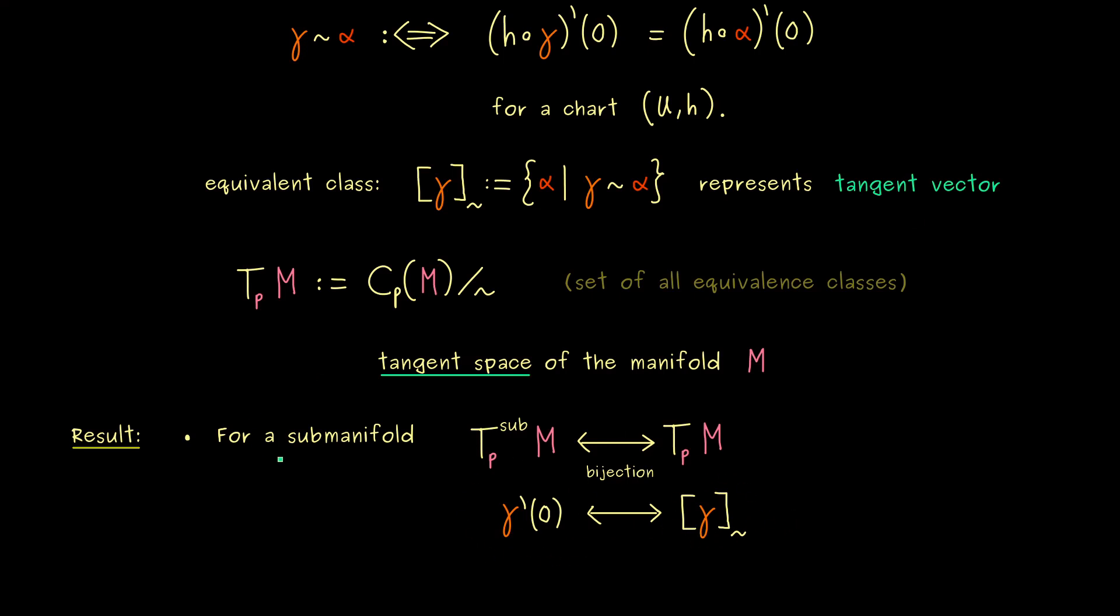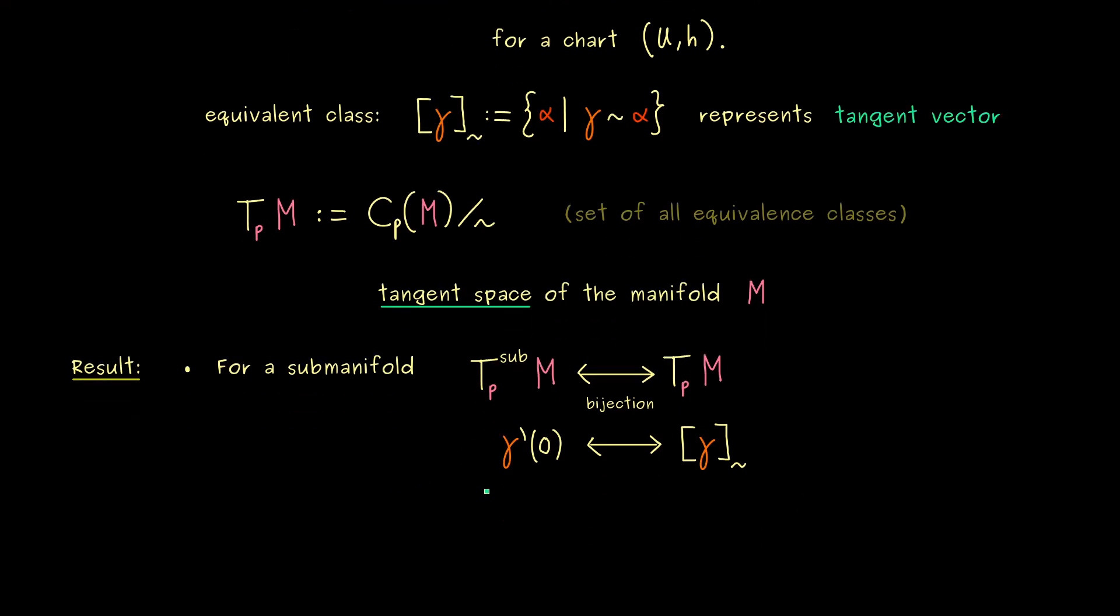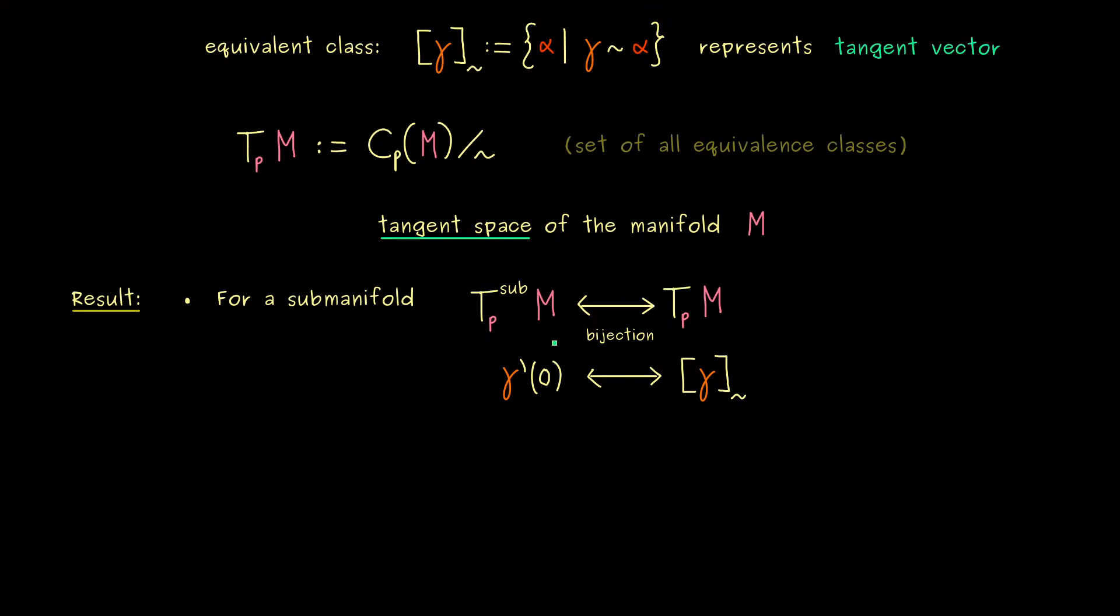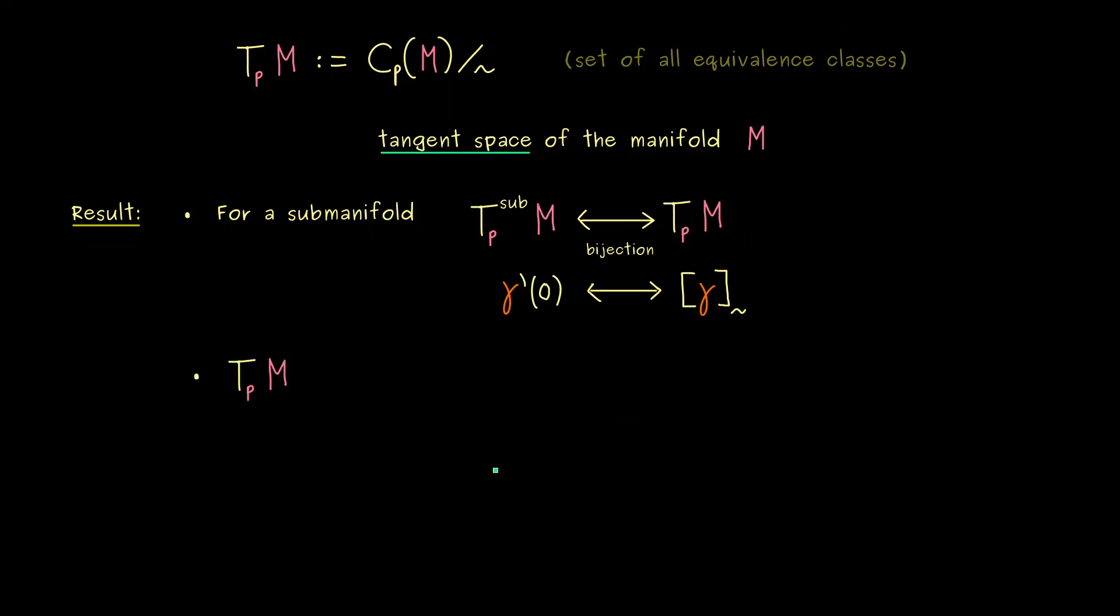And then, of course, it is no problem to push this tangent vector to the upper level. Hence, we see, for a submanifold, now we can choose which tangent space is better for our calculations. In fact, because of this bijection, we will often not distinguish between both tangent spaces.